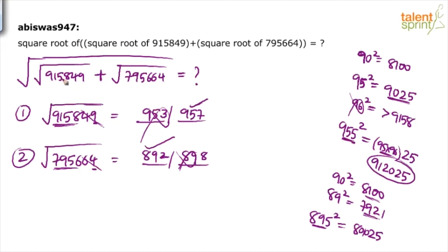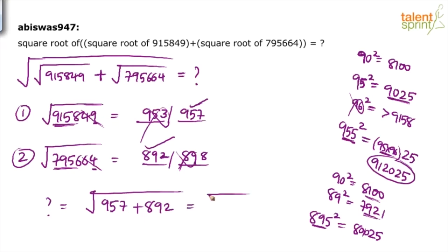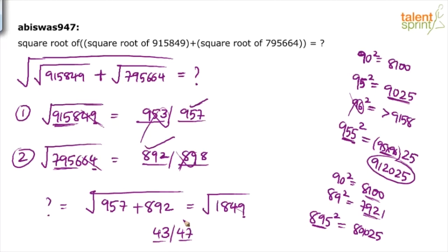Now the third step: replace the square roots with 957 and 892. The question mark equals the square root of 957 plus 892, which is the square root of 1849. For 1849: number ends in 9, so answer ends in 3 or 7; the remaining part is 18, and the highest square less than 18 is 16 (4 squared), giving leading digit 4. Since 1849 is less than 45 squared (2025), the answer is 43. So the final answer is 43.